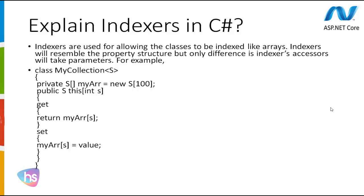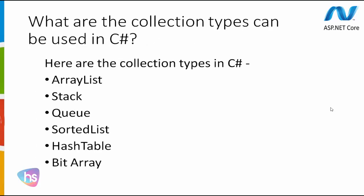Coming to the next one: what are the collection types that can be used in C-Sharp programming language? The collection types in C-Sharp are: ArrayList, Stack, Queue, SortedList, HashTable, and BitArray. These are the collection types used in C-Sharp programming language.